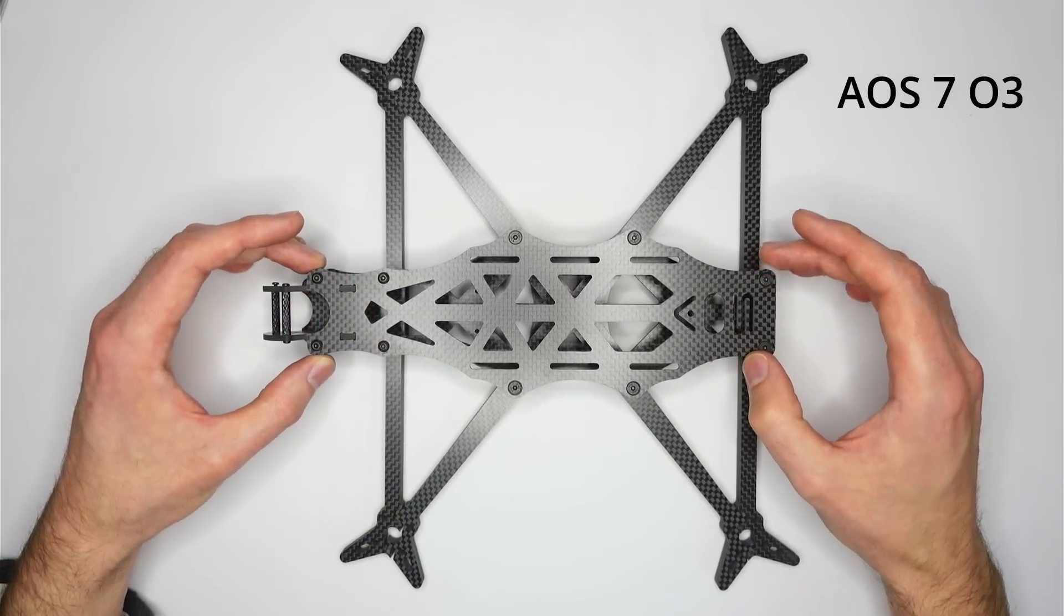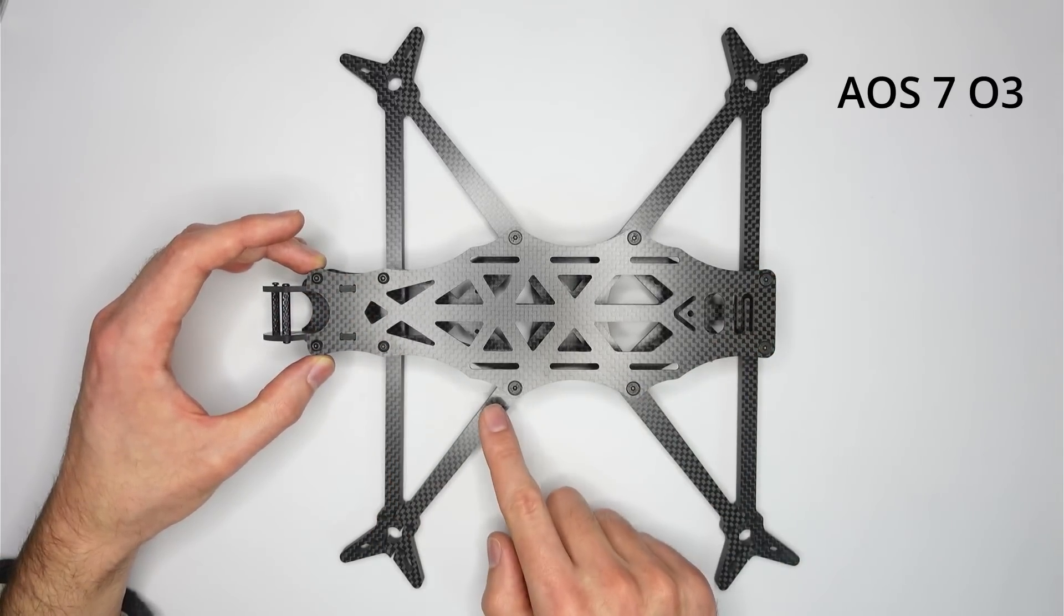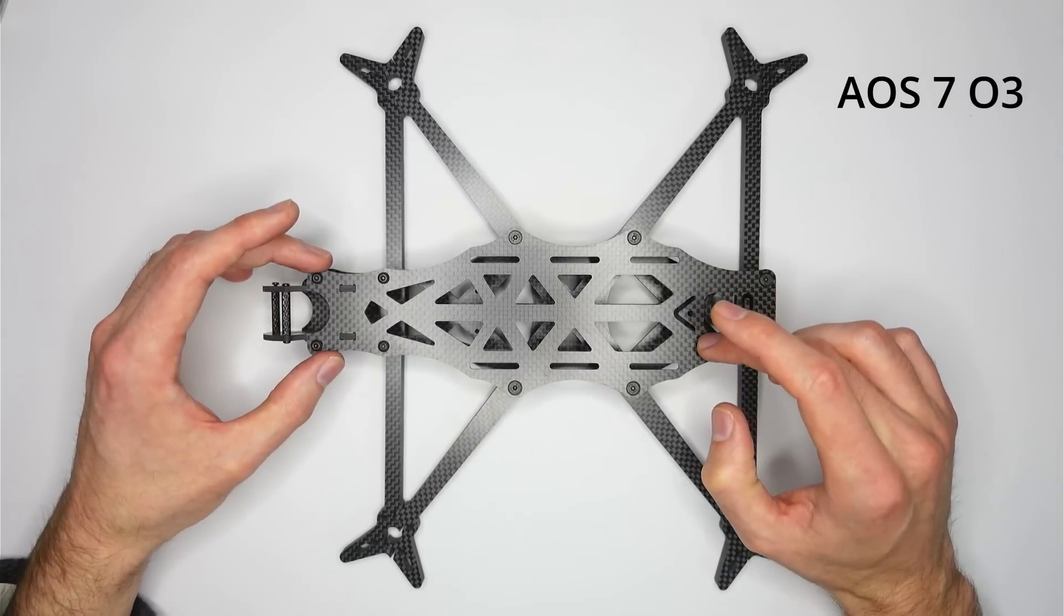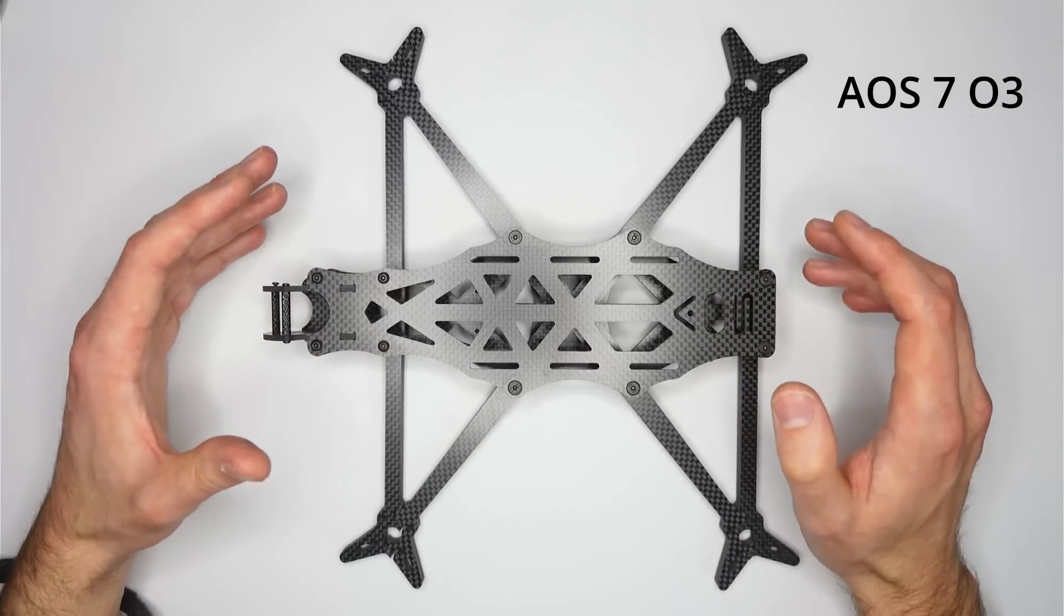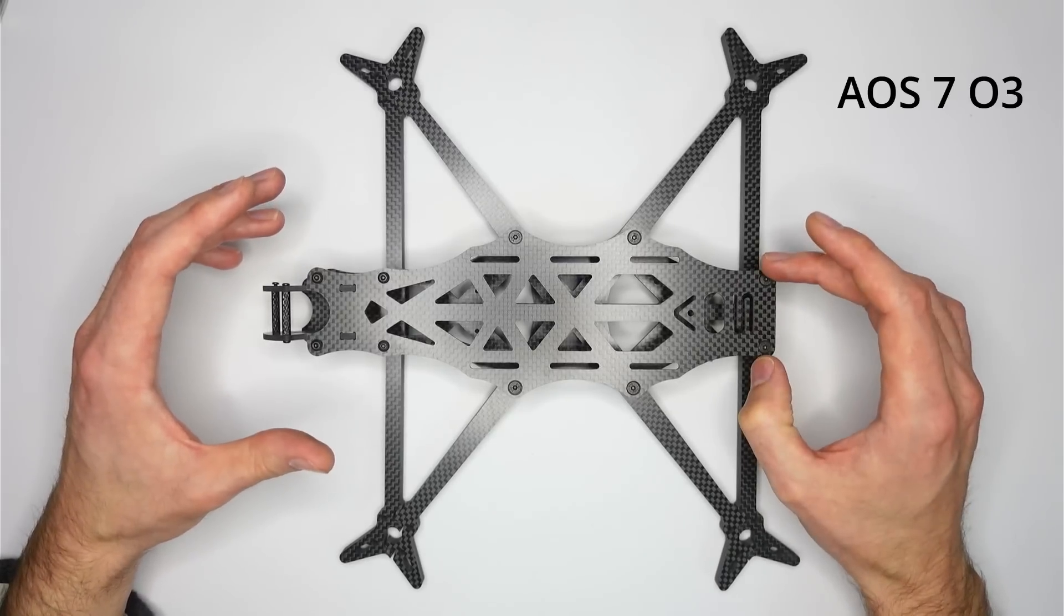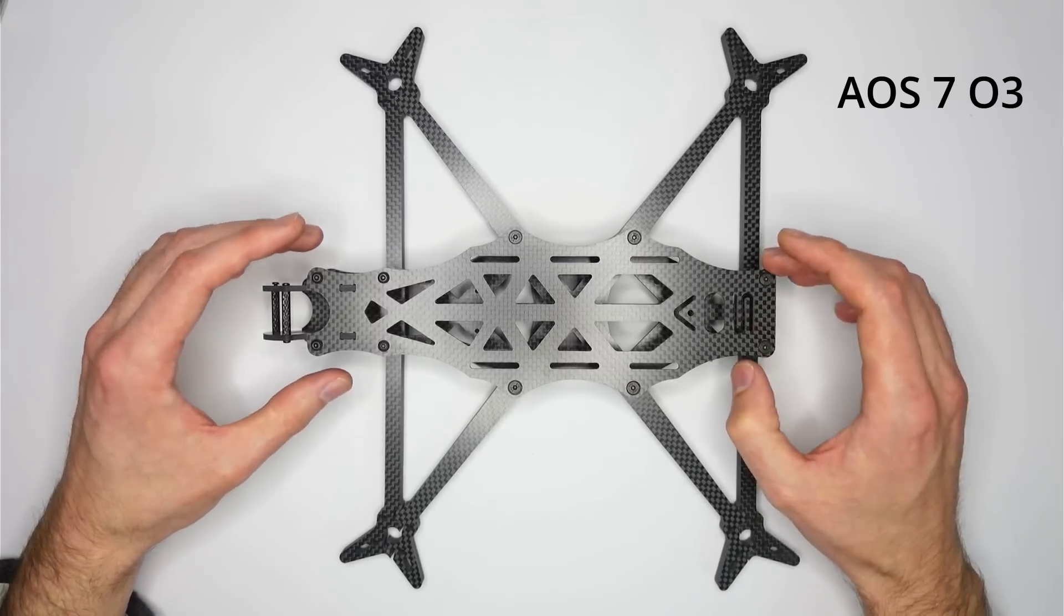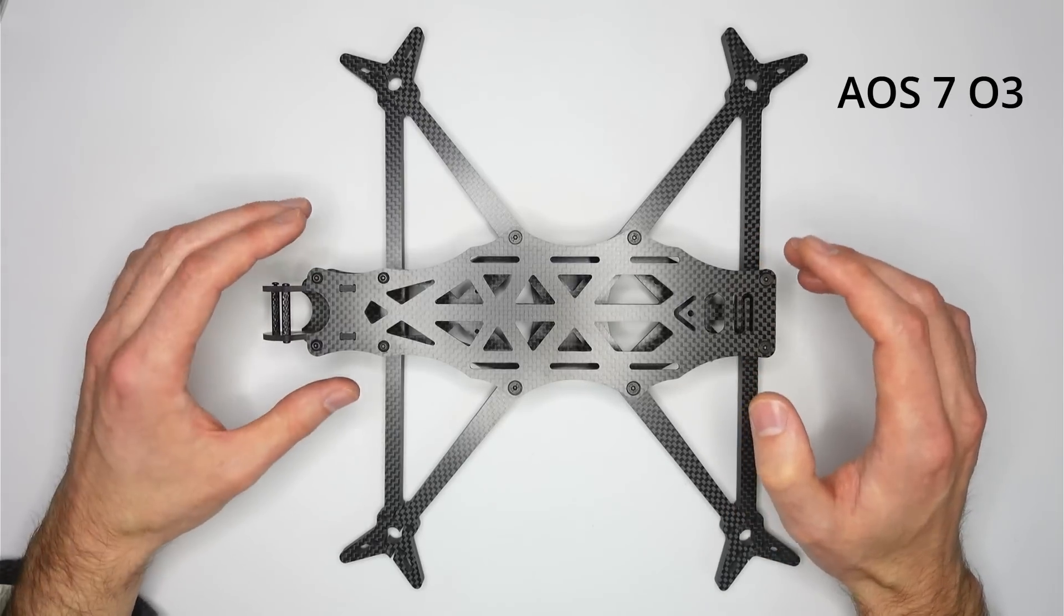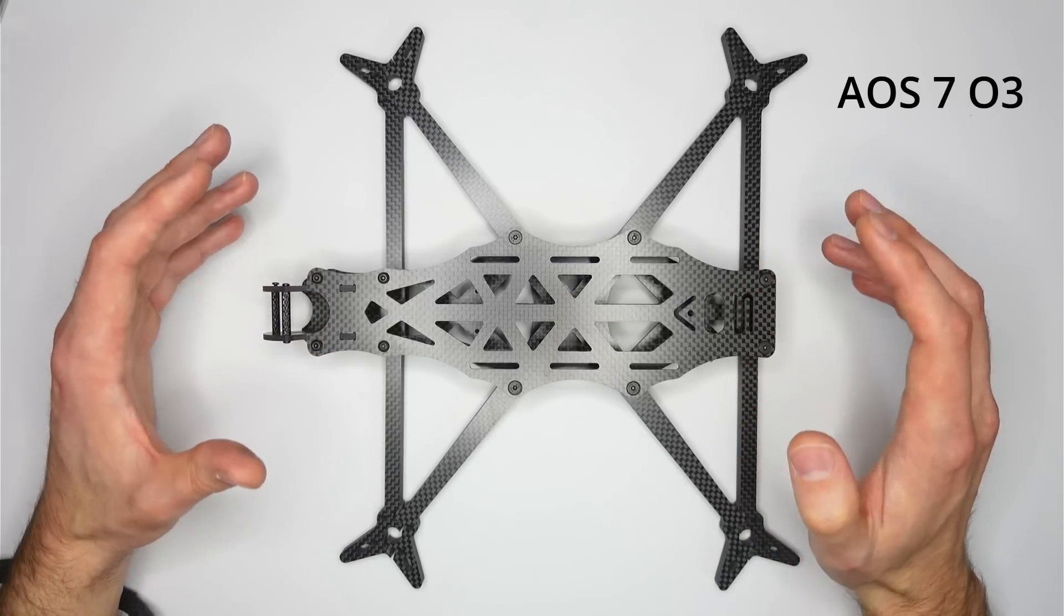This frame's party piece is that the arm structure is so stiff that you can run a really aggressive filter and PID tune on this quad, something similar to what you would run on a 5-inch build, and that gives you fantastic flight performance, really responsive flight feel, and also super smooth footage if you're looking to use this frame to capture cinematic type shots.